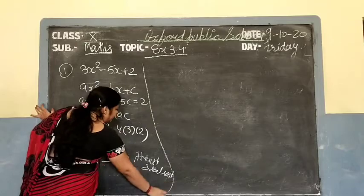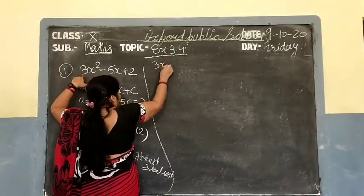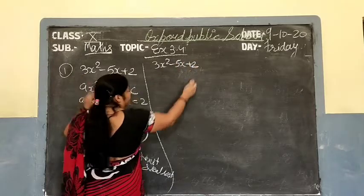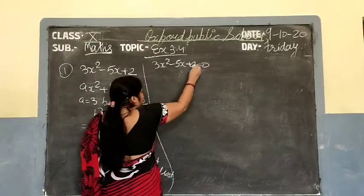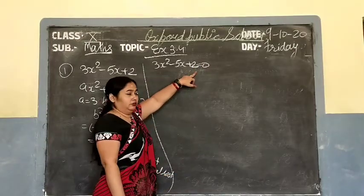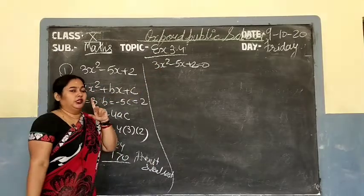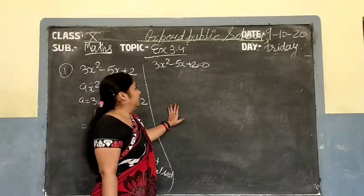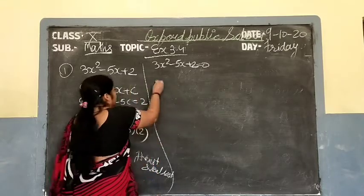Now we need to find the roots. First, write 3x square minus 5x plus 2 equal to 0. The coefficient of x square must be made 1, so divide the whole equation by 3. If the coefficient of x square is already 1, division is not necessary; if not 1, divide by 3.